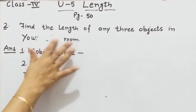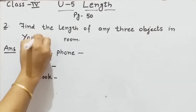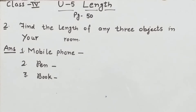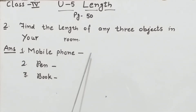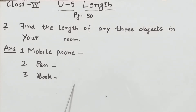आपने सबसे पहले question में change करेंगे — 'find the length of any three objects in your classroom' की जगह हम 'room' लिखेंगे, क्योंकि यह activity based question है और आप classroom में नहीं हो। तो first है mobile phone, उसकी length लिखो। Next है pen — pen को measure करके length लिखो। Next आपकी book है। Book के अलावा आप study table की length को भी measure करके write कर सकते हैं अगर आप study table पर पढ़ते हो।